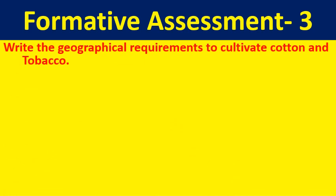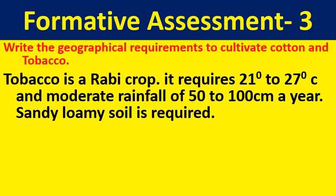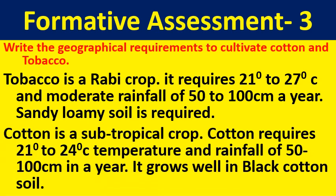Write the geographical requirements to cultivate cotton and tobacco. Tobacco is a rabi crop. It requires 21 to 27 degrees Celsius temperature and moderate rainfall of 50 to 100 centimetres a year. Sandy loamy soil is required. For cotton, we require 21 to 24 degrees Celsius temperature. It is a subtropical crop. It requires 50 to 100 centimetres of rainfall a year and grows well in black cotton soil.